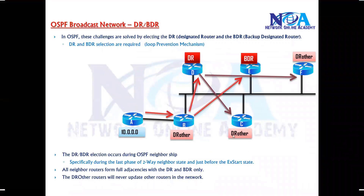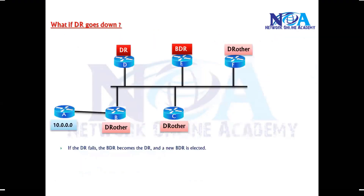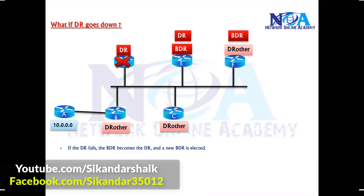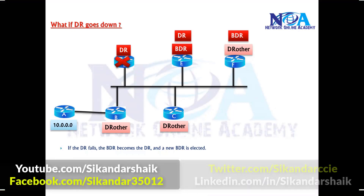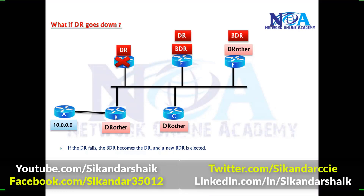This election is an automated process, though we can influence it by changing priority values. If the DR goes down due to a router or interface failure, the BDR automatically becomes the DR, and a new BDR is elected from the remaining routers. The same update process continues with the newly elected DR and BDR.